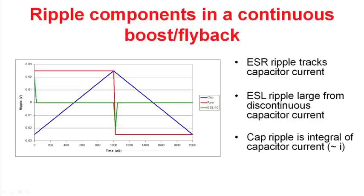The third trace is the component that's associated with the ESL. And you'll see that I've had to divide the ripple voltage by a factor of 10 to get it to show up on this chart. And so with a discontinuous output current, the ripple voltage that's associated with the ESL can be pretty significant. And this is the reason that many times you see two-section filters in boost and flyback converters.